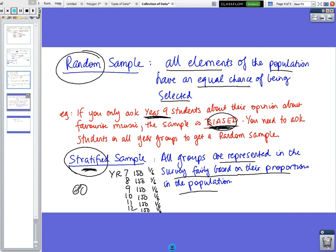So if you have 60 people in the survey, then you need to ask 10 from each of the year groups. And then you would have a stratified sample. If the fractions are different, like these fractions have to add to one, but the fractions would,